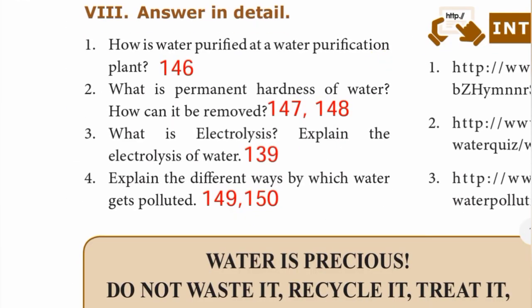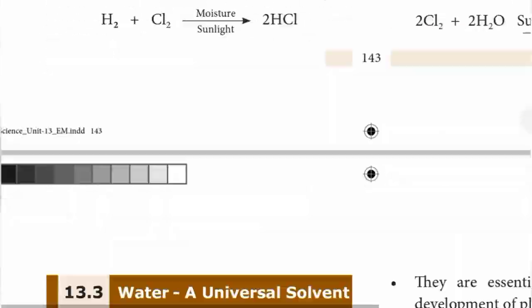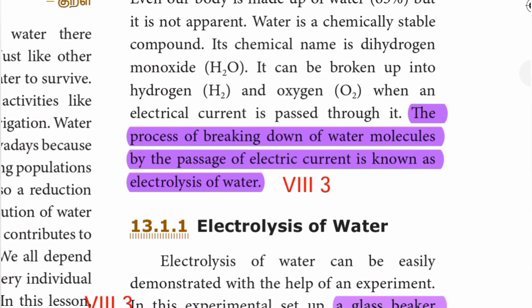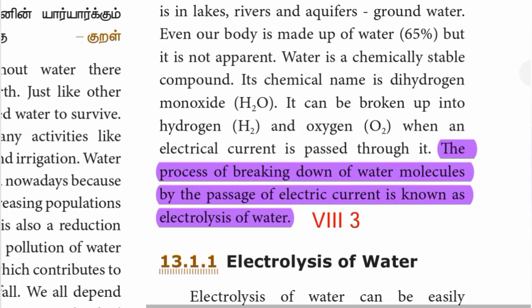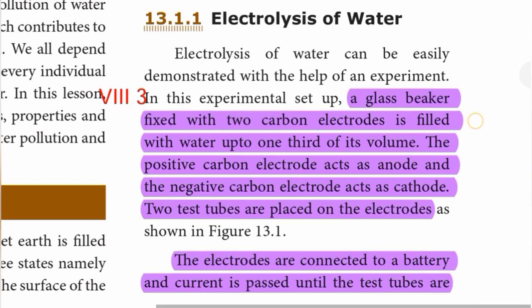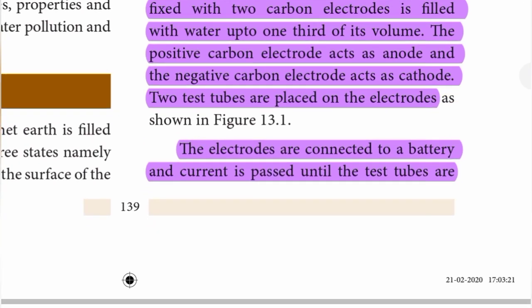Detail question 3: What is electrolysis? Explain the electrolysis of water. Page number 139. Electrolysis is the process of breaking down of water molecules by the passage of electric current. In the experiment, a glass beaker fixed with two carbon electrodes is filled with water up to one third of its volume. The positive carbon electrode acts as anode and the negative carbon electrode acts as cathode. Two test tubes are placed on the electrodes, which are connected to a battery and current is passed until the test tubes are filled with gas.